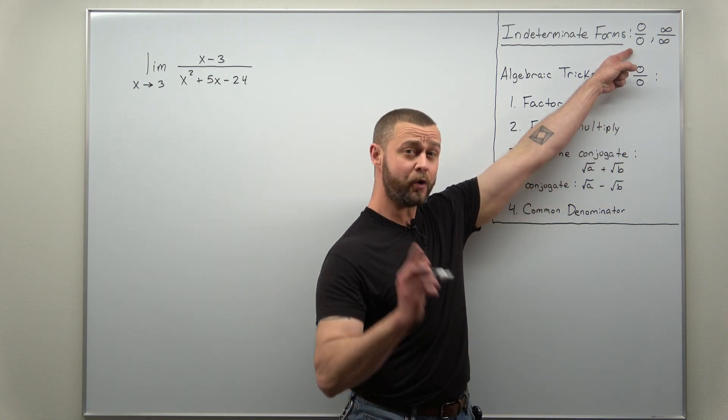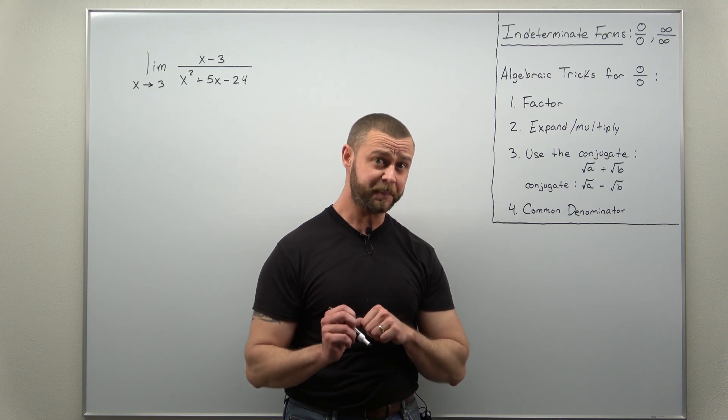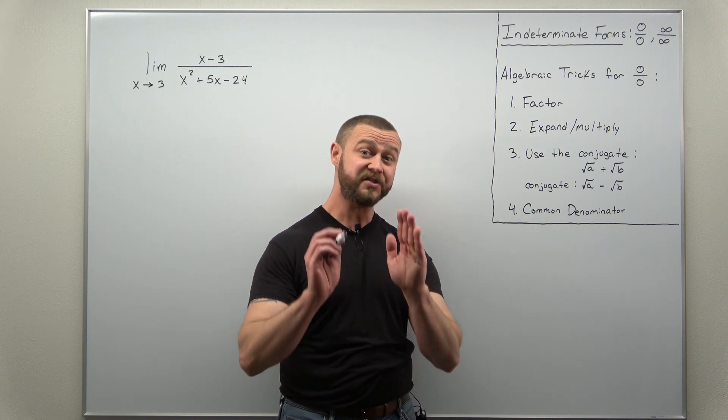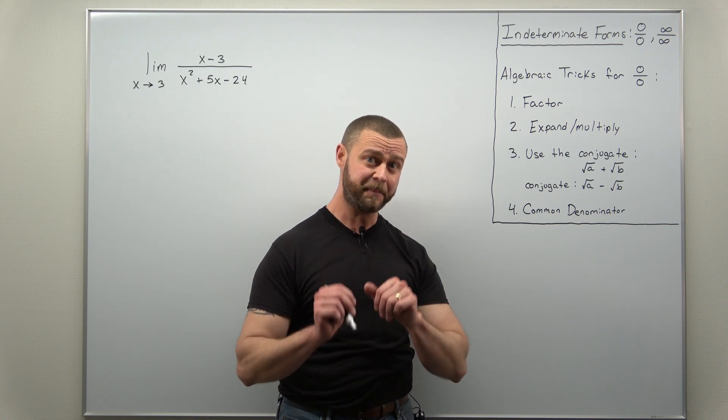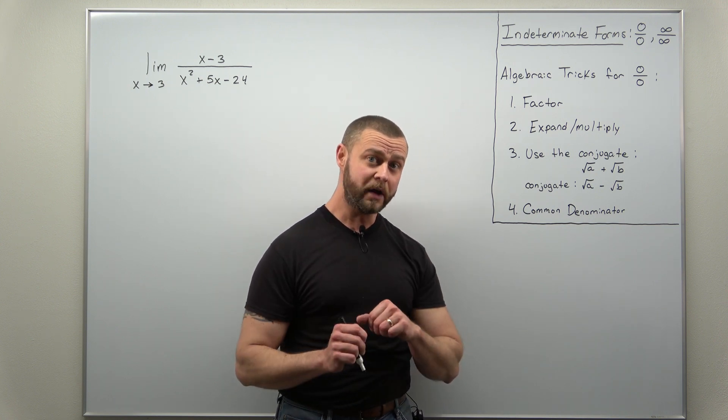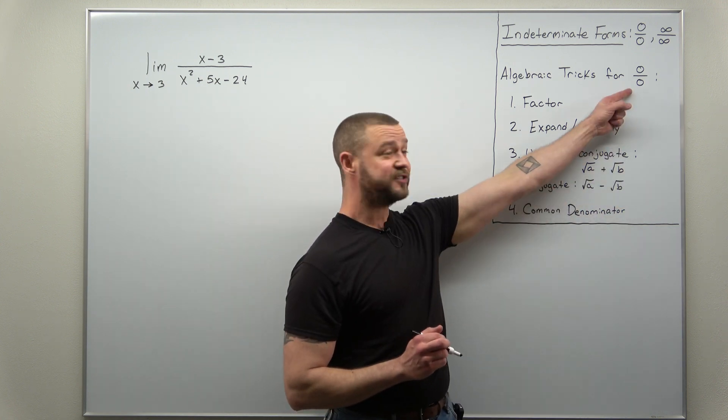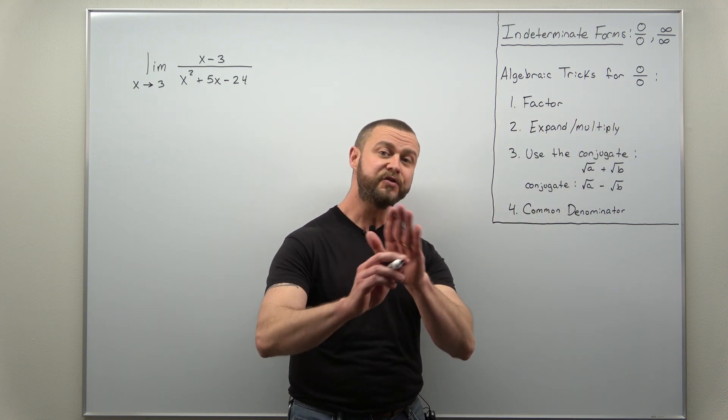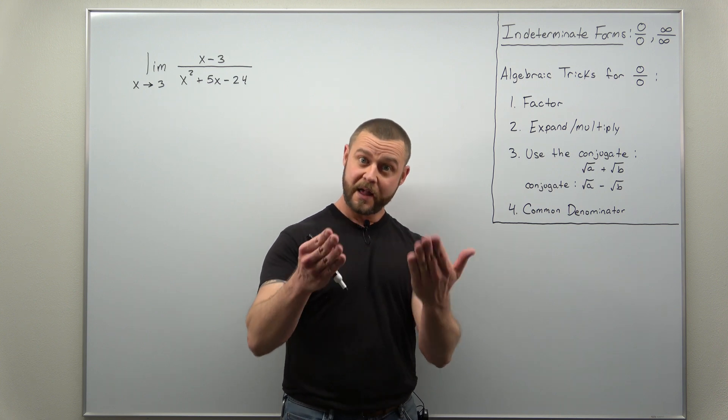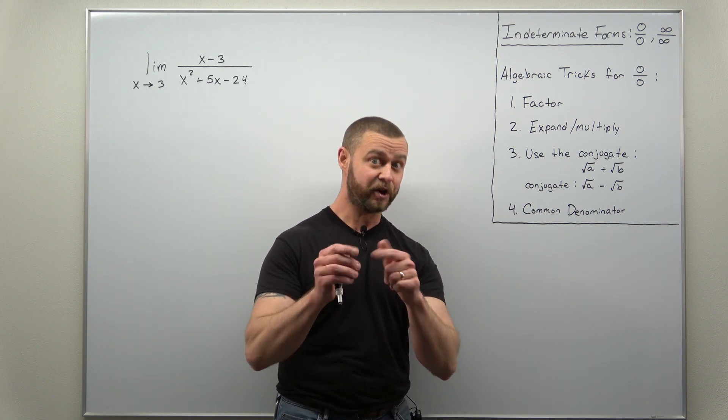The first is the type zero over zero, and the other one is infinity over infinity. Now normally a number divided by itself cancels to one. The exception is zero divided by zero. That can be anything. There is no determined value, hence why we call it an indeterminate form.